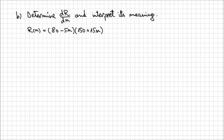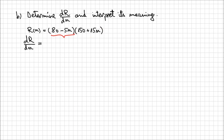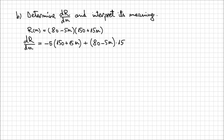Let's calculate the derivative of this function with respect to n. We can easily apply the product rule since it's a product of two expressions. The derivative of the first expression is −5, times the second expression (150 + 15n), plus the first expression unchanged (80 − 5n) times the derivative of the second expression, which is 15. Expanding those parentheses gives us −750 − 75n + 1200 − 75n.